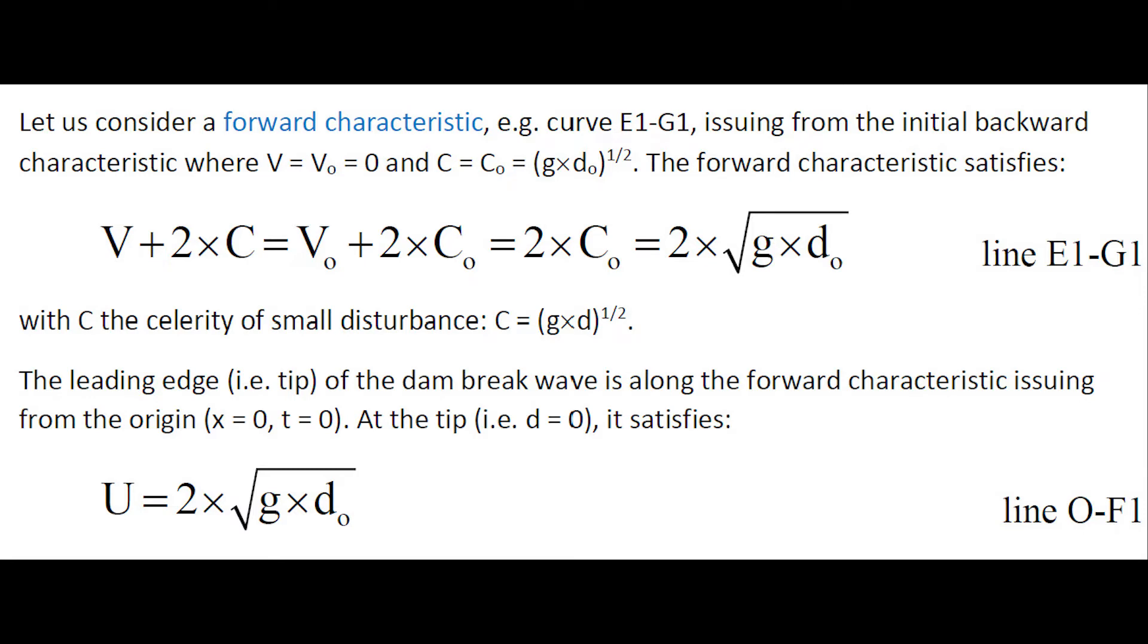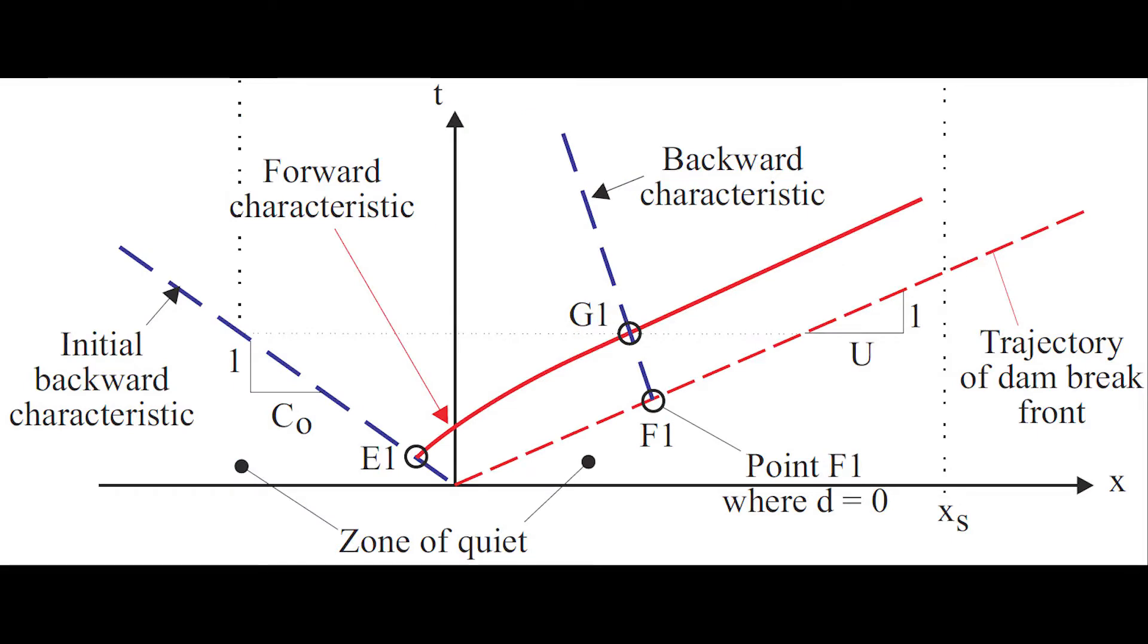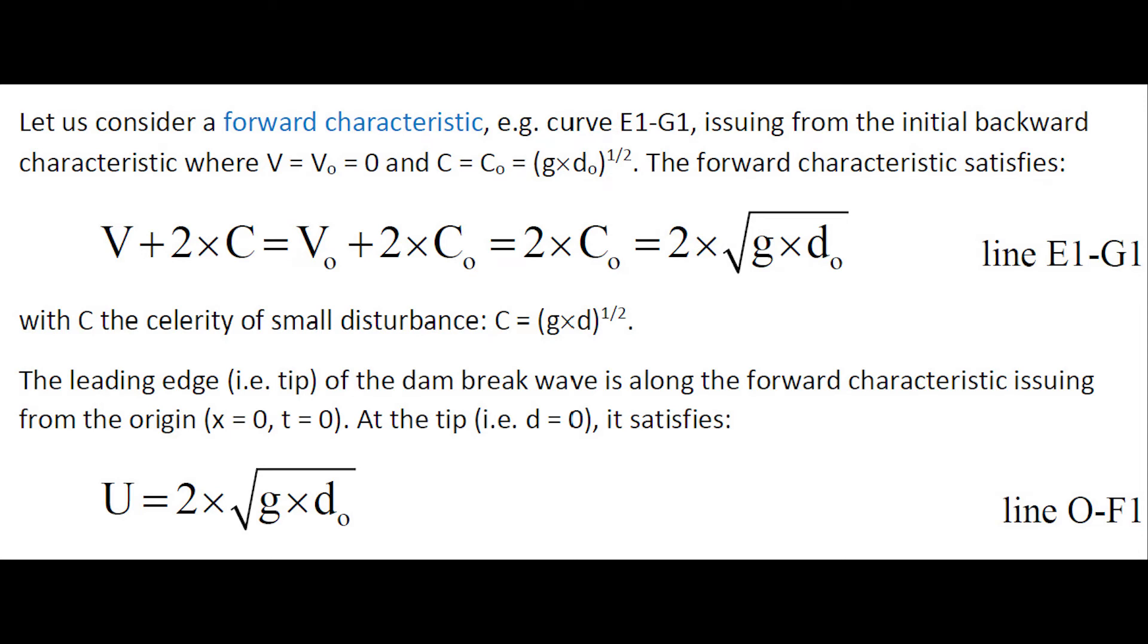Let us now consider a forward characteristic issuing from the initial backward characteristic, where v equals 0 and c equals square root of G-D-not. The forward characteristic satisfies v plus 2c equal constant, hence v plus 2c equal 2 times square root of G-D-not.